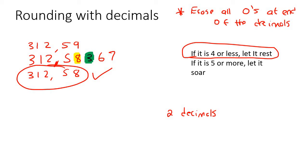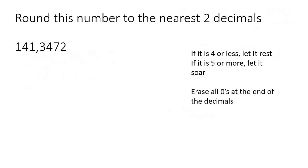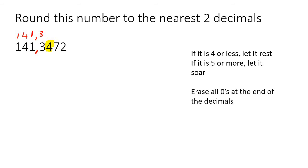We're going to spend the rest of this lesson doing quite a lot of examples to make sure you really understand this. This one says round the number to the nearest two decimals. So here's the decimal — look at two numbers after that, so that's the first number and the second number. It's the 4 that is our last decimal. So the possible answers could be 141,35 or 141,34.